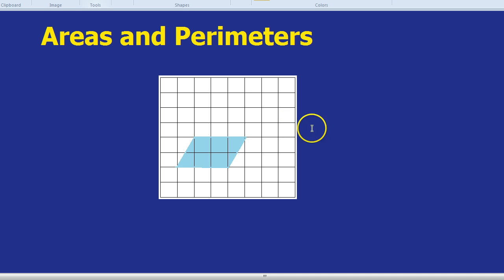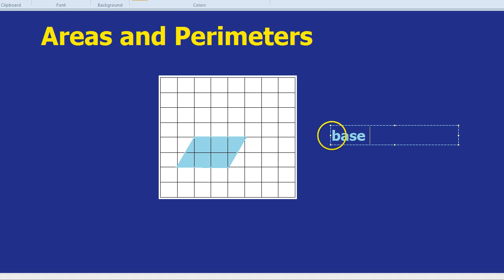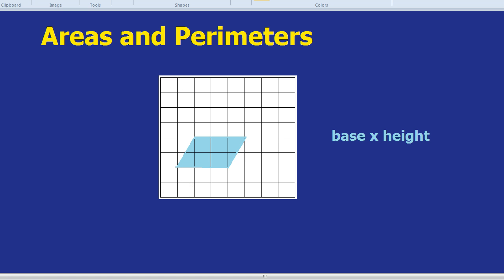And what's the area of a parallelogram? It's base times by height. So we don't need to count the boxes. We do the base, which is 3, times the height, which is 2. 3 times 2 is 6. So the area of this parallelogram is 6.